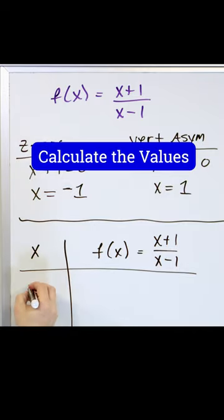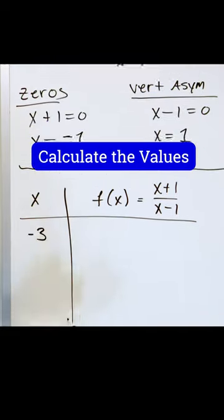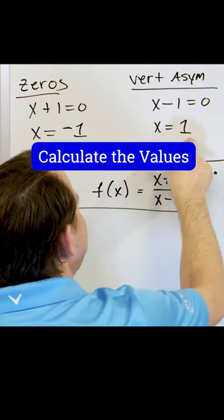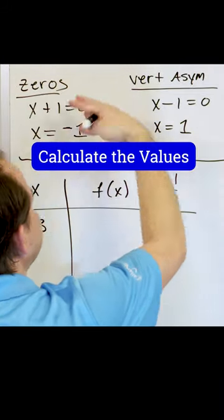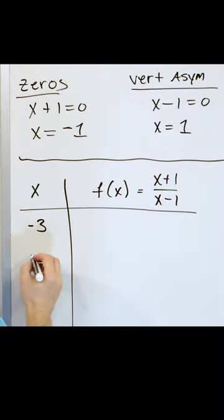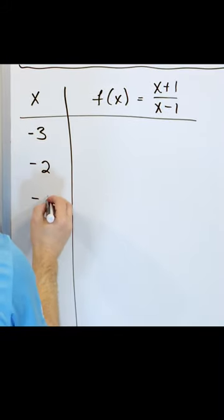What values do I put in my table? Well, let's go ahead and you kind of get some experience. But the bottom line is I know there's a vertical asymptote at one, so I want some points on the left and some points on the right there. So I'm gonna go negative three, negative two, negative one.